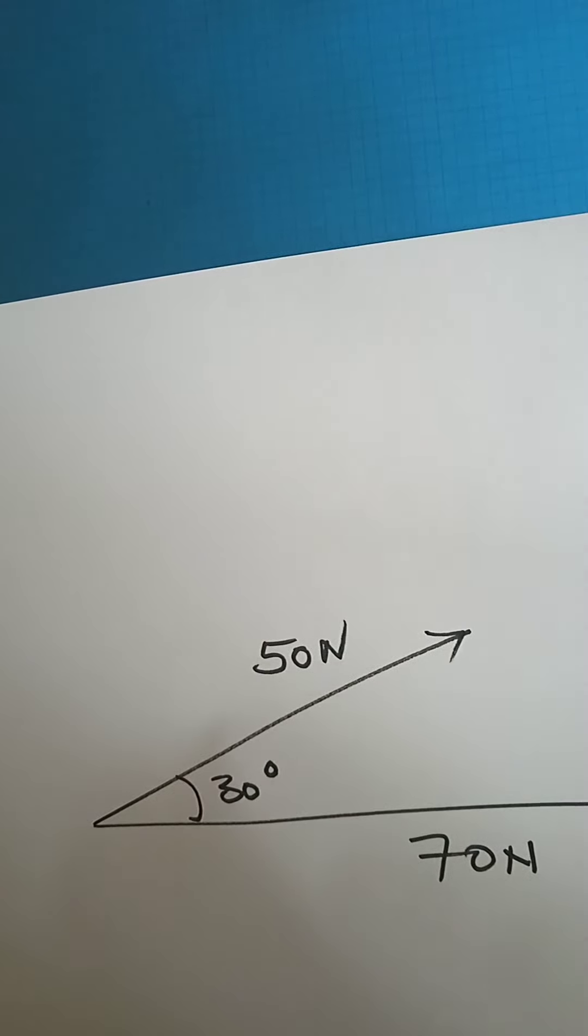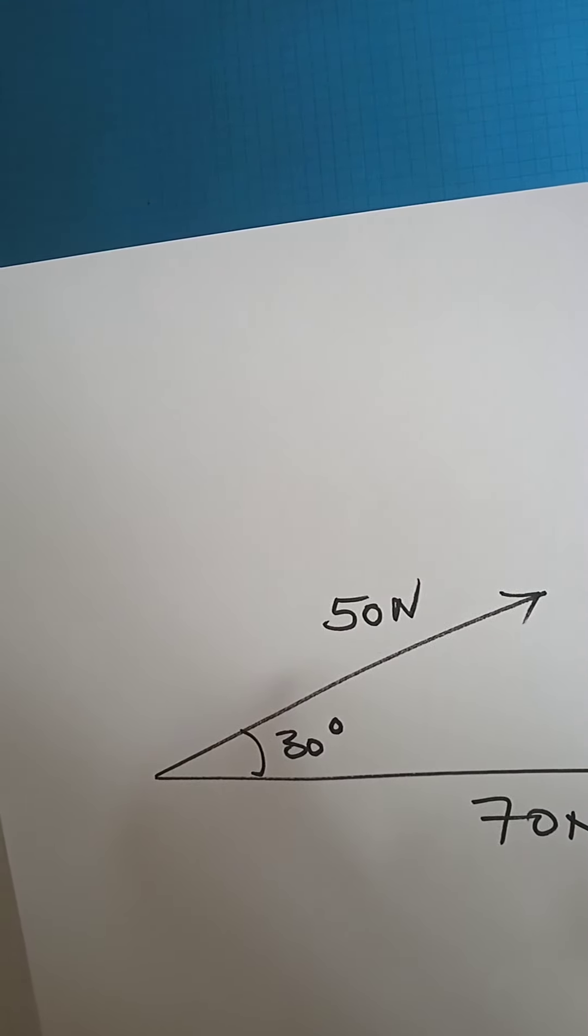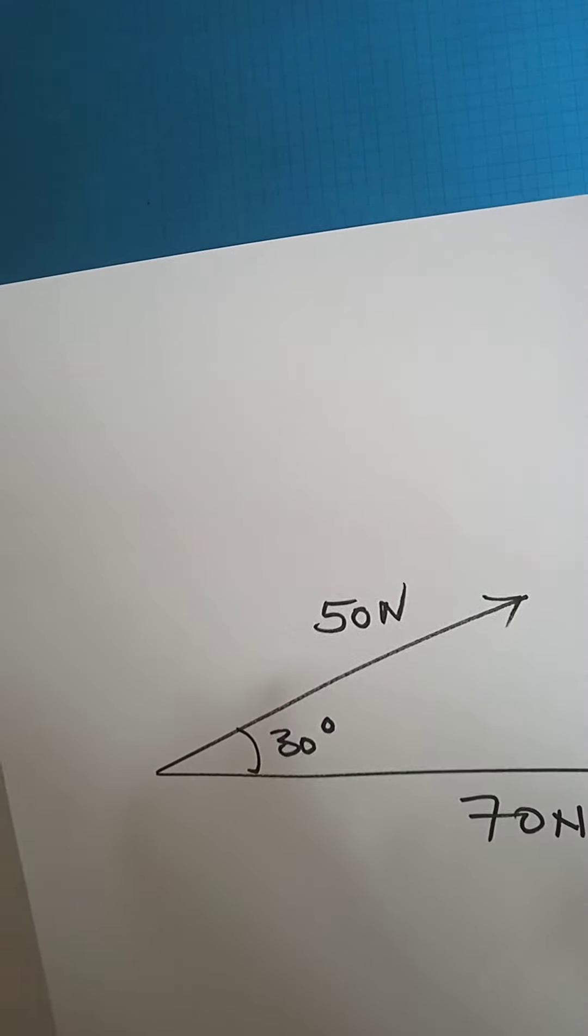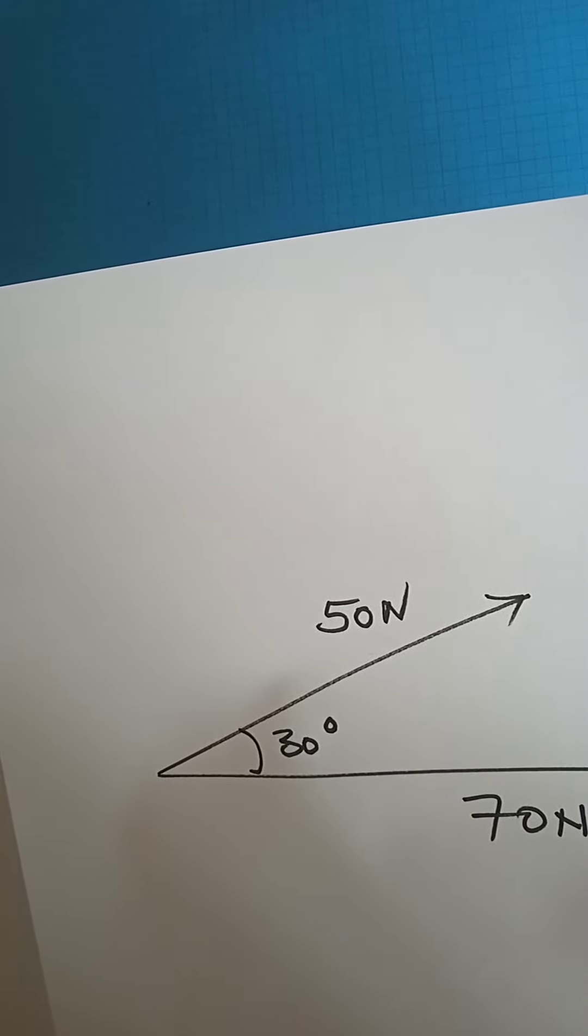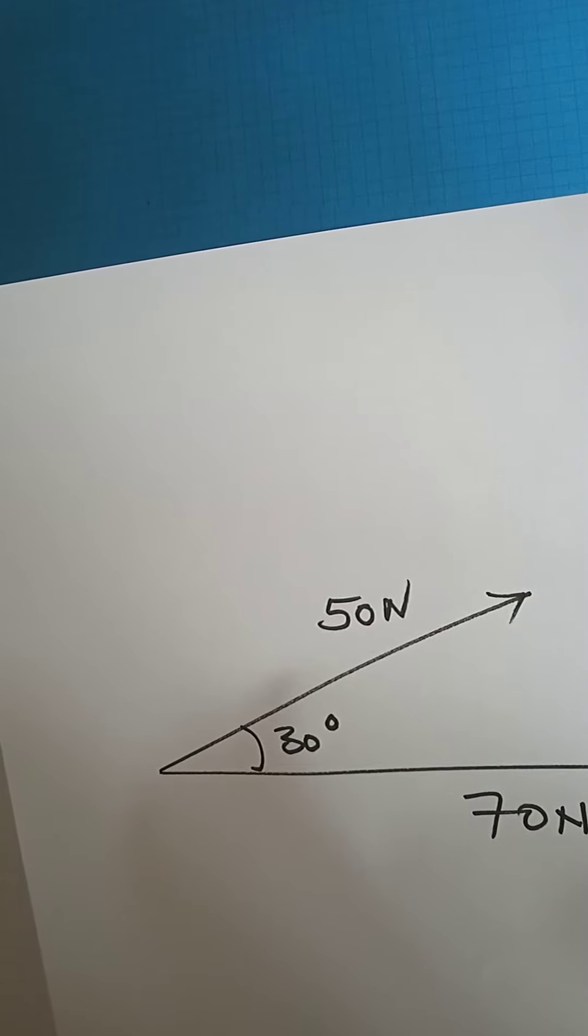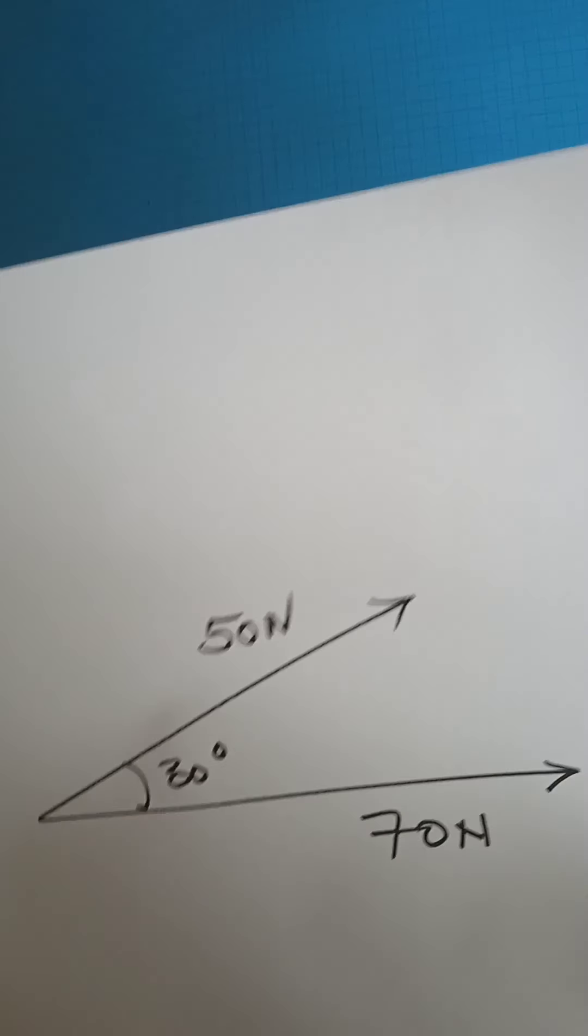This time around we are going to deal with the parallelogram of forces. The parallelogram of forces rule states that if two forces act on a point and they move in different directions, then the resultant will be the diagonal of the parallelogram formed with the two forces.